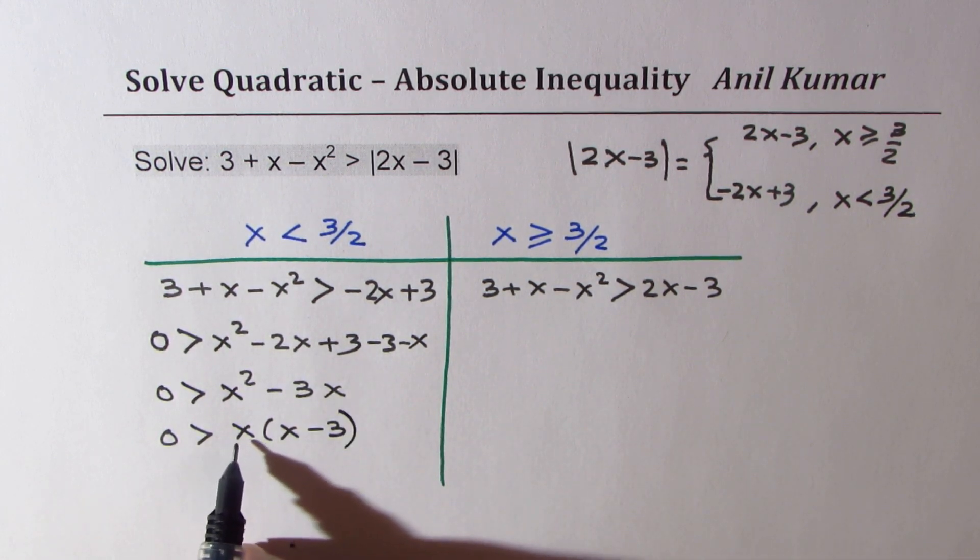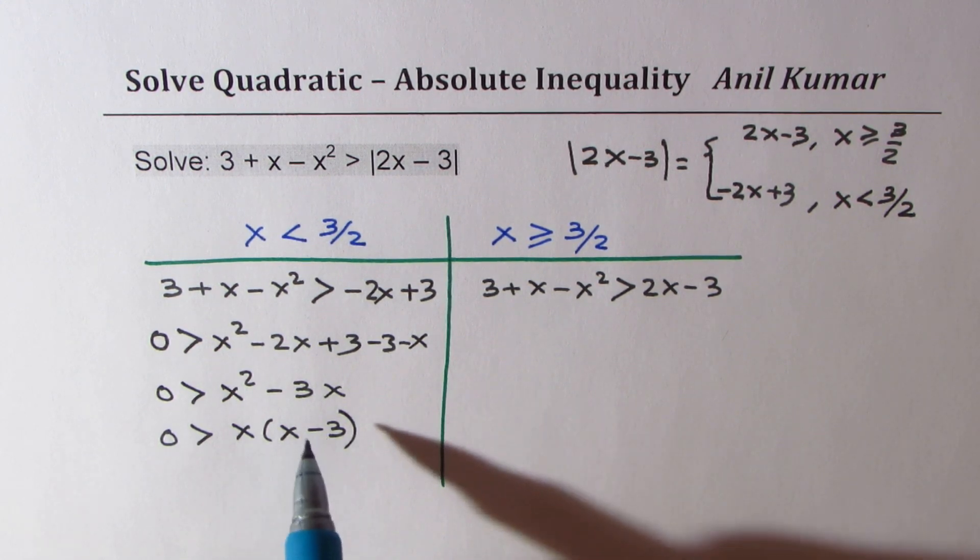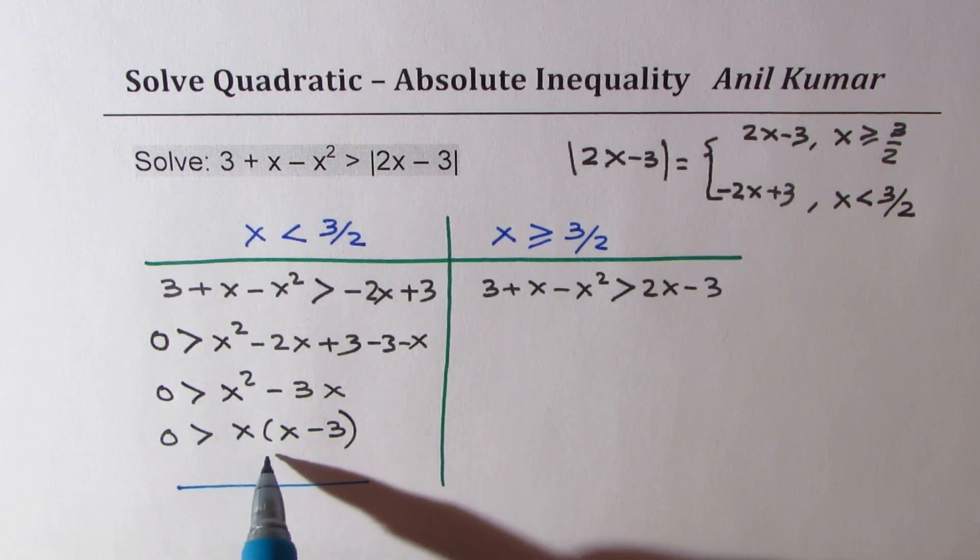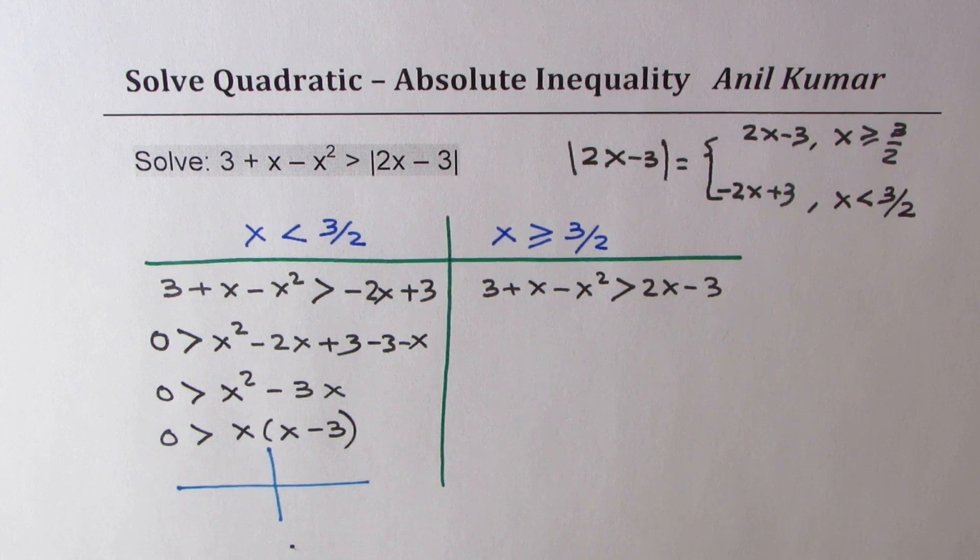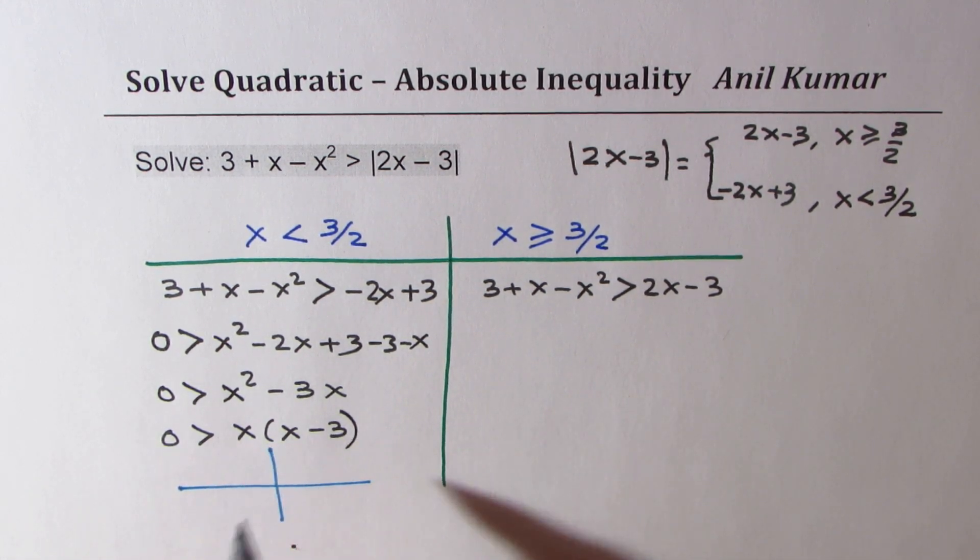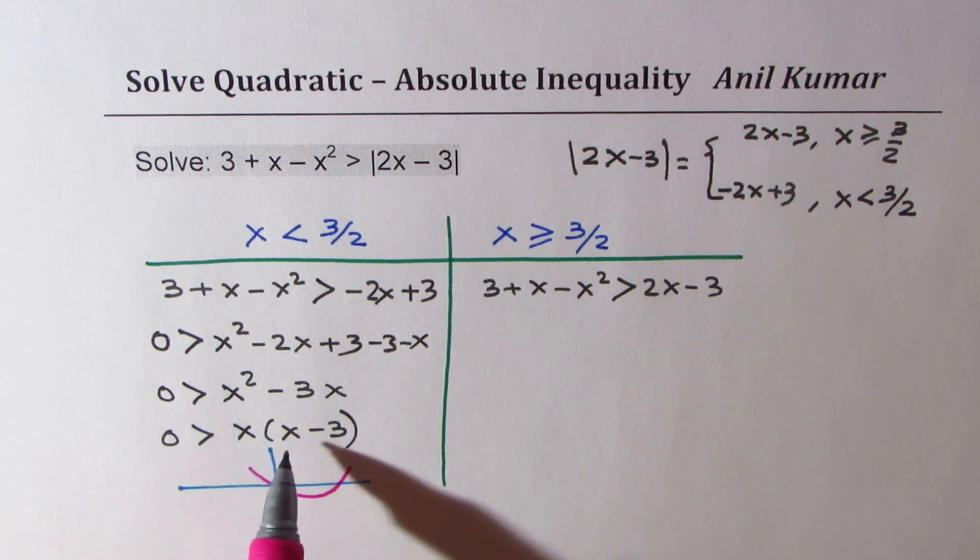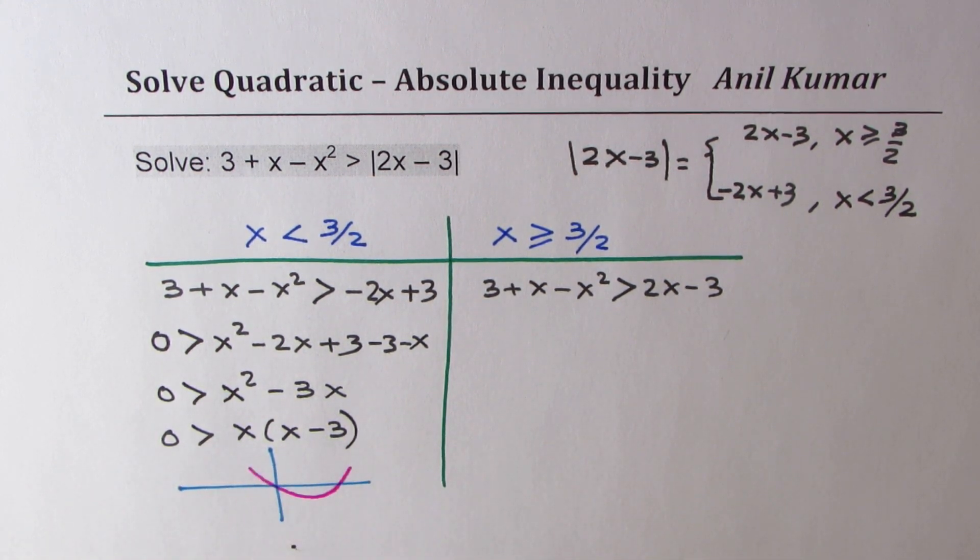So we get a parabola, which you can now solve for inequalities. So this part is, if you sketch, how will it look like? So x times x minus 3 will be a parabola, which will be kind of like this. We want that to be less than 0. That is to say, we are looking for this interval.